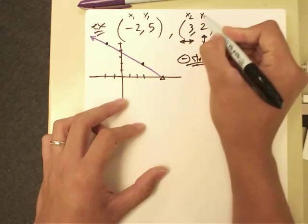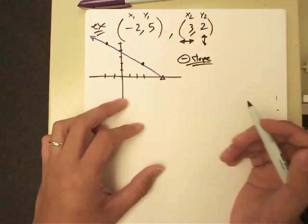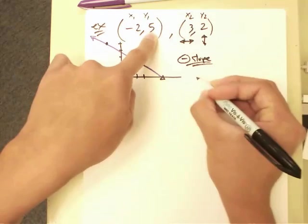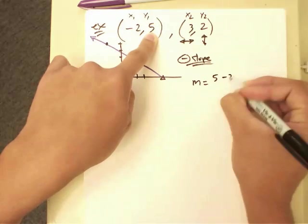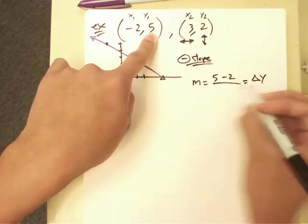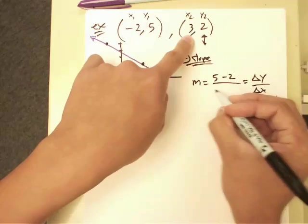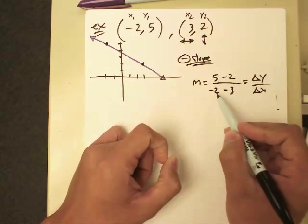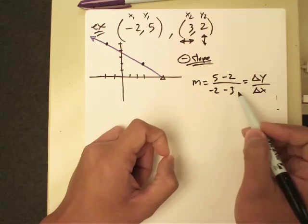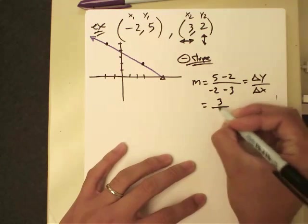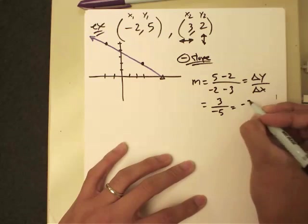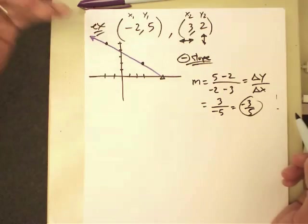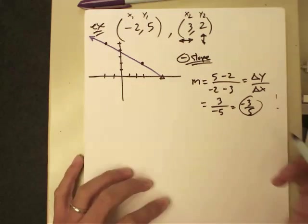Using the formula with x1 = -2, y1 = 5, x2 = 3, y2 = 2: slope = (y1 − y2) / (x1 − x2) = (5 − 2) / (−2 − 3) = 3 / −5 = −3/5. It is a negative slope, as expected. Remember: if you go with y1 − y2 in the numerator, you must also go with x1 − x2 in the denominator — you can't mix and match.